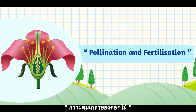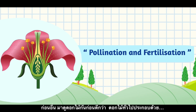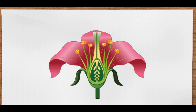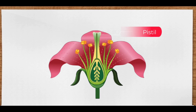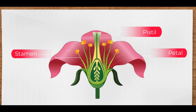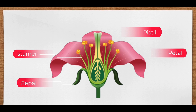Pollination and Fertilization. First of all, let's look at a flower closely. A general flower consists of pistil, stamen, petal, and sepal.